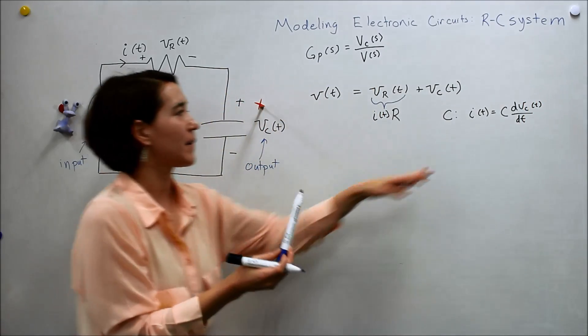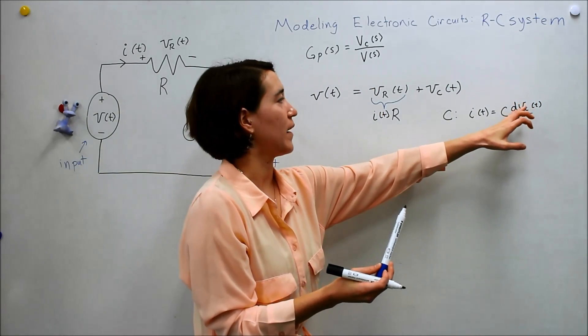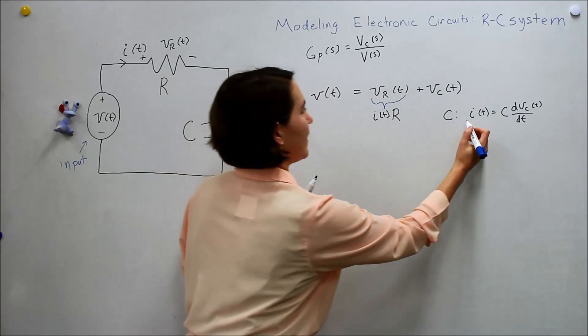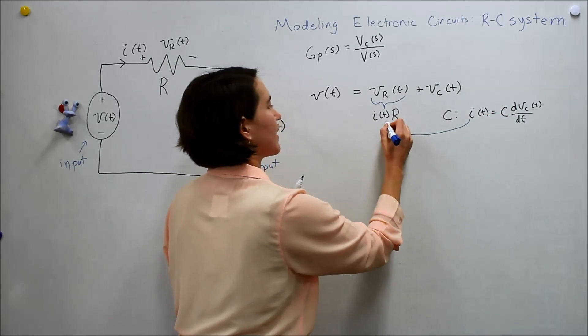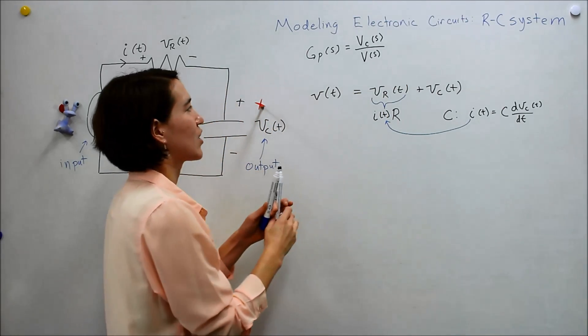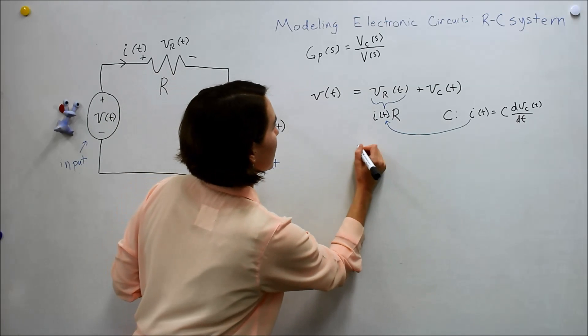So this is our capacitor voltage that we want. And if we take this I and we substitute it into here, and then we take this expression and substitute it into here, we should get everything in terms of v and vc. So let's rewrite that out.